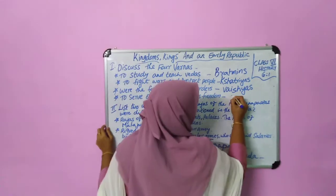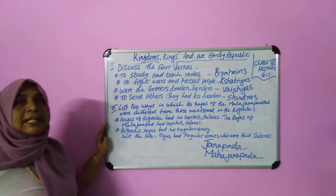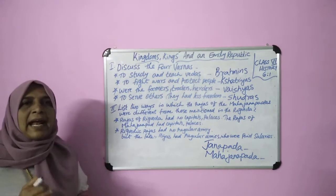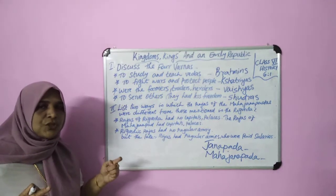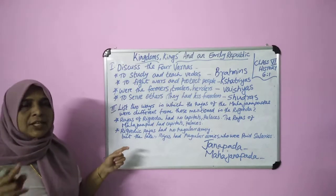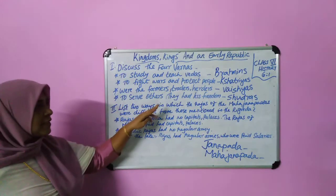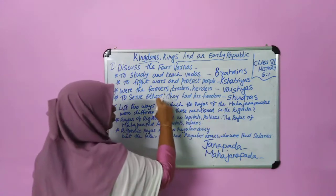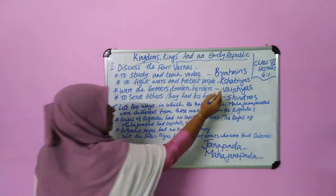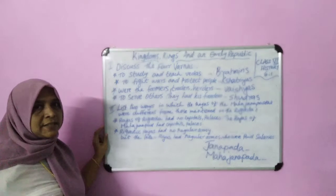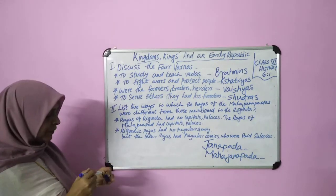The fourth and last varna, shudras, were to serve the other three castes. They had less freedom. Shudras served the other three castes, while kshatriyas and vaishyas could perform sacrifices. Shudras had little or less freedom.